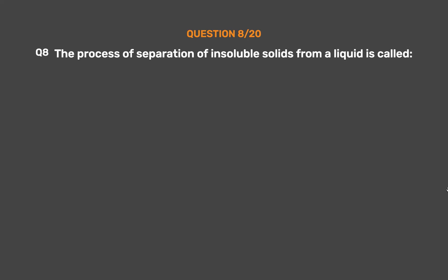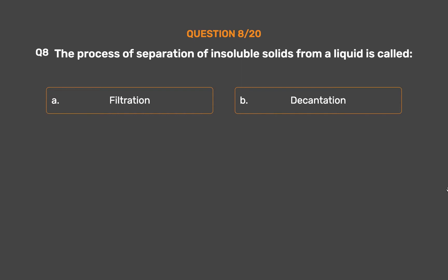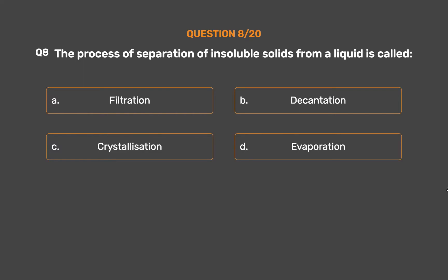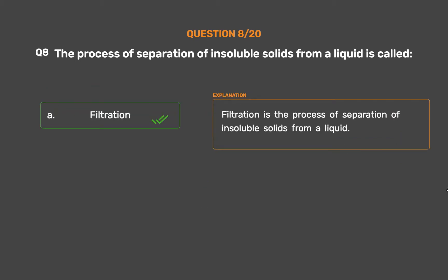Question number 8. The process of separation of insoluble solids from a liquid is called: Option A: Filtration. Option B: Decantation. Option C: Crystallization. Option D: Evaporation. The correct answer is Option A: Filtration. Filtration is the process of separation of insoluble solids from a liquid.